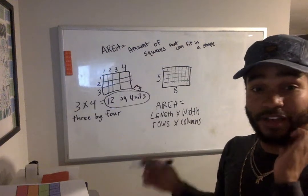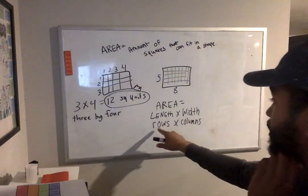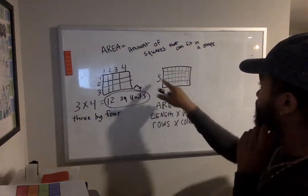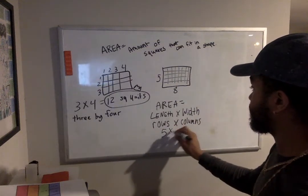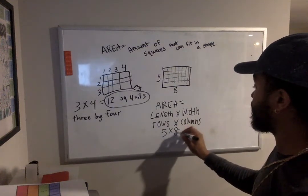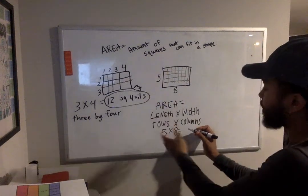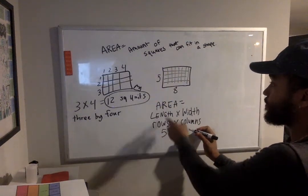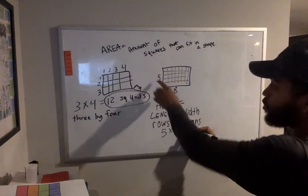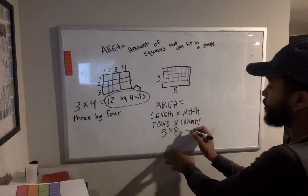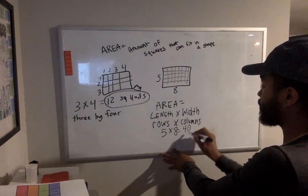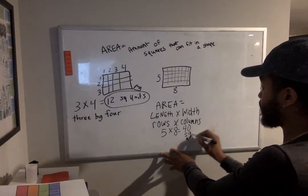Or I can use something quicker. I'm just multiplying the rows times columns. So five times eight. And instead of drawing all those squares, I would already know five times eight. The rows times the columns. Or the length times the width.